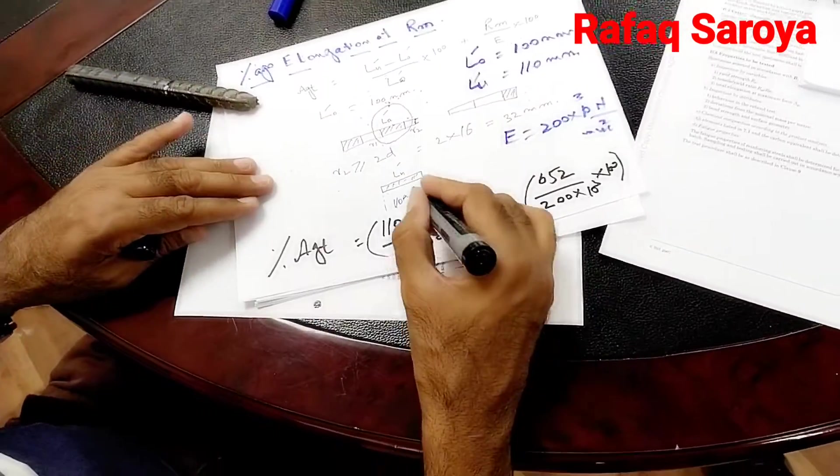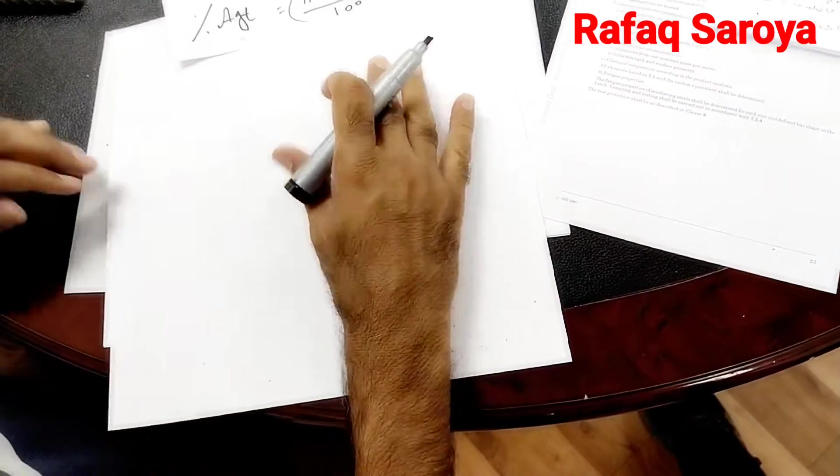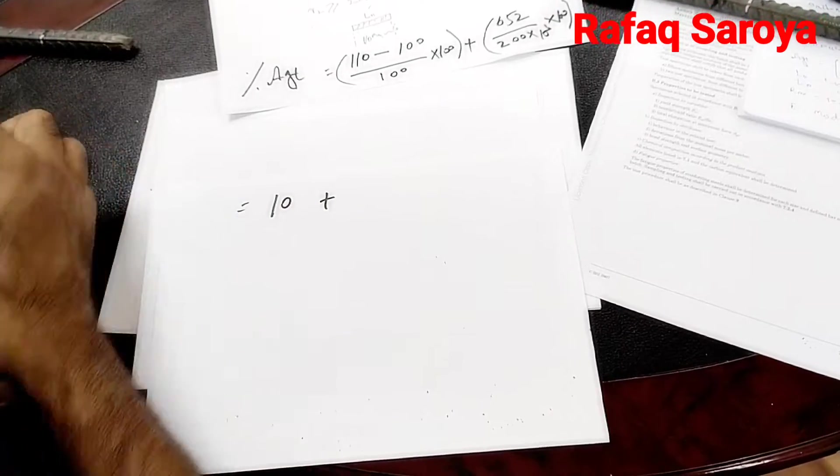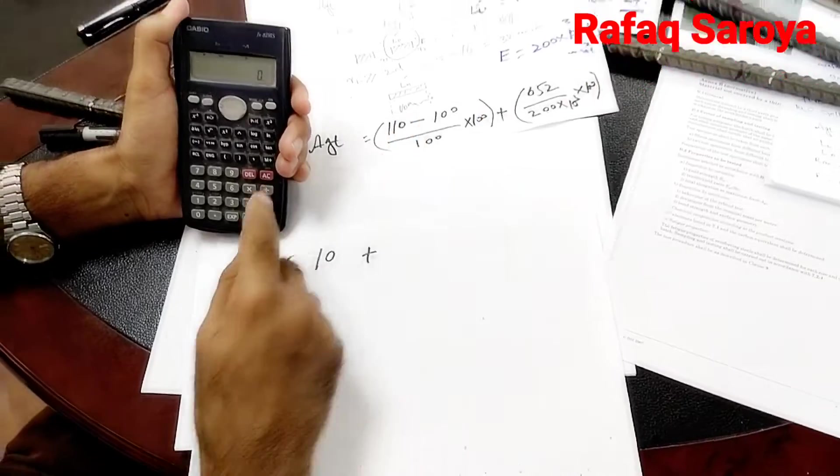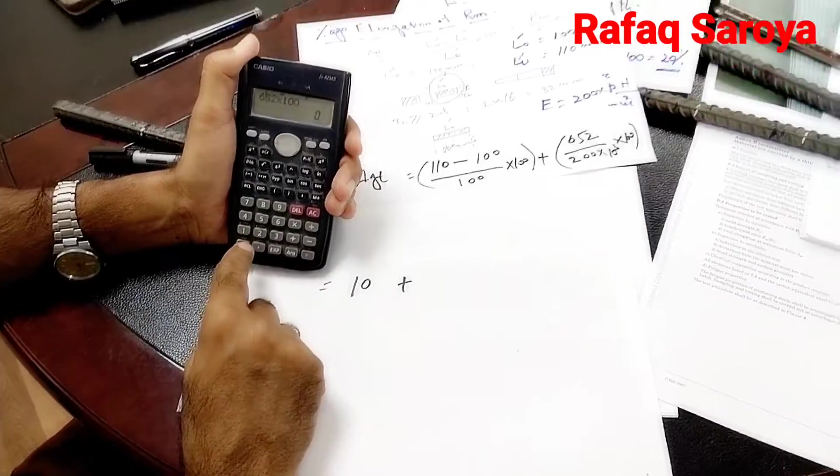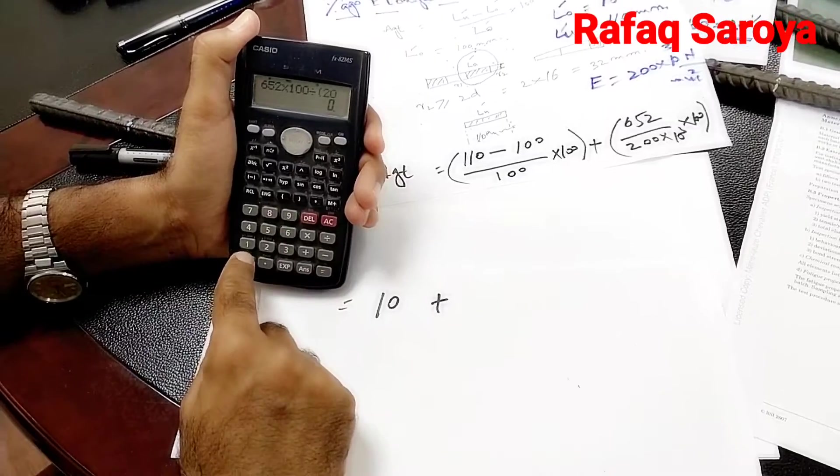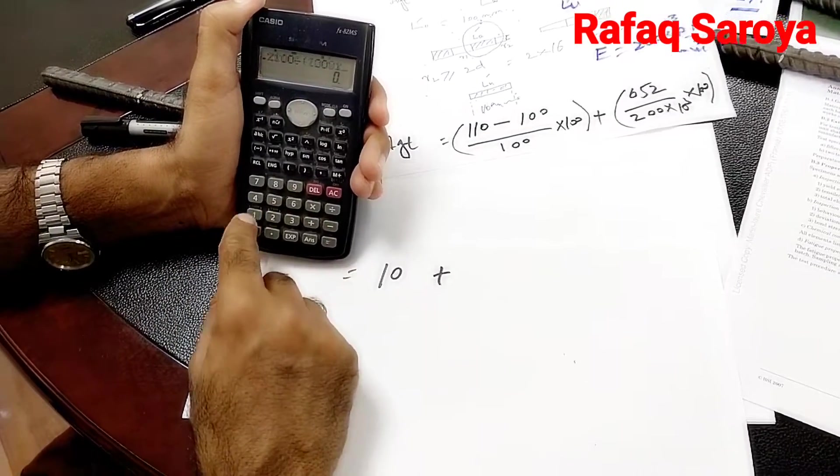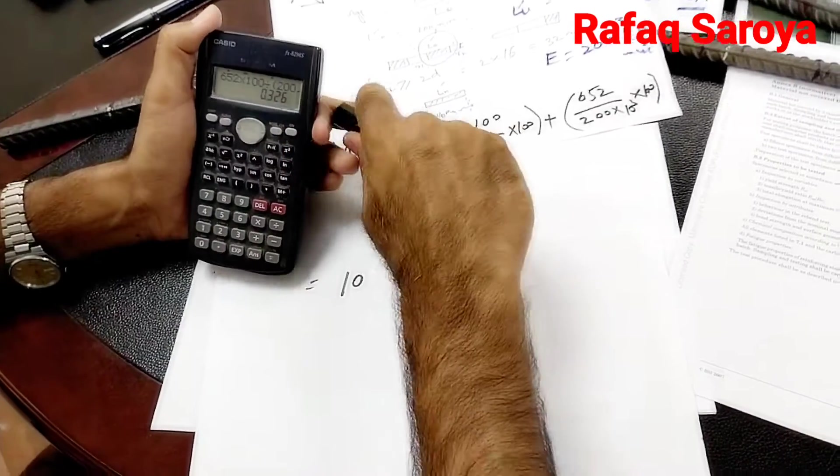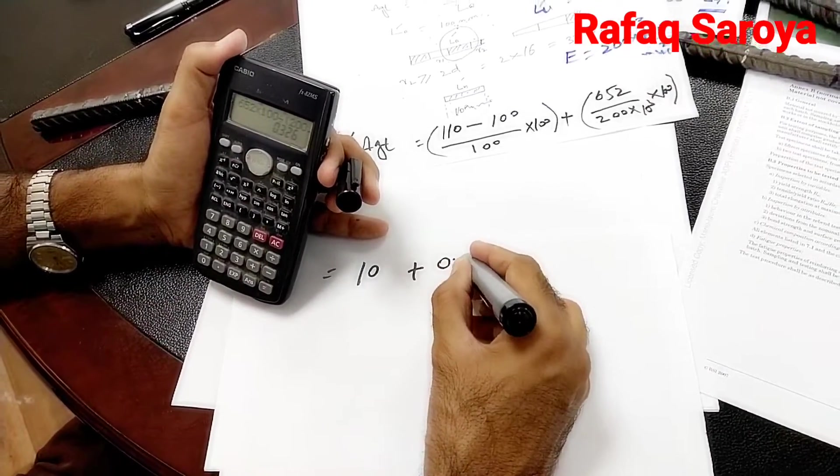And its value was 652 divided by 200. As I make this calculation here, I am going to get the value of 10 plus 652 multiplied by 100 divided by 200, 100 multiplied by 0.326 approximately.